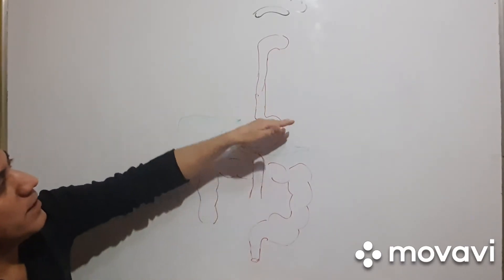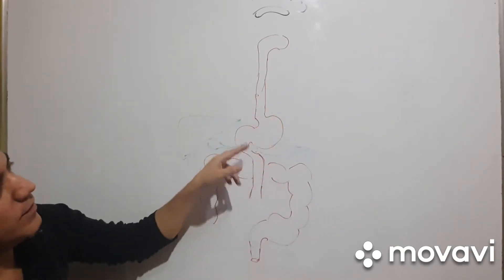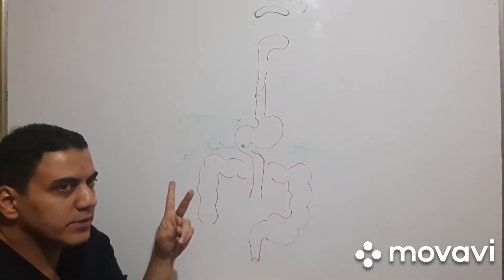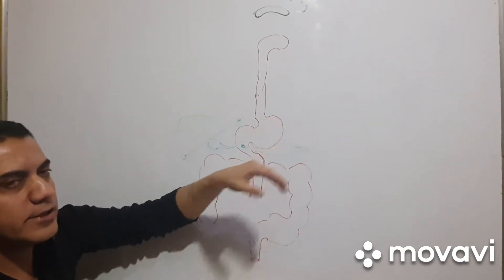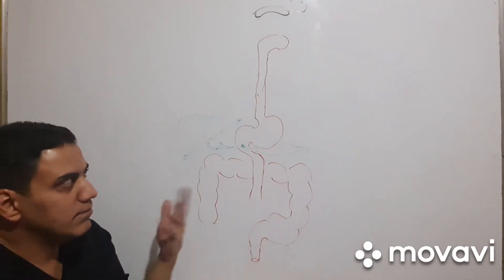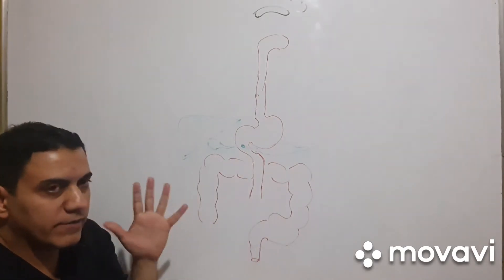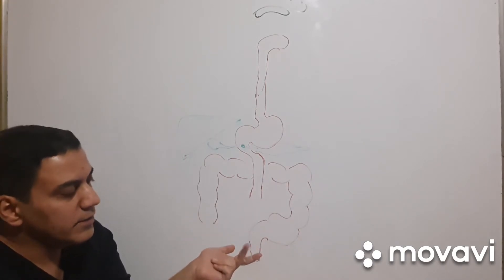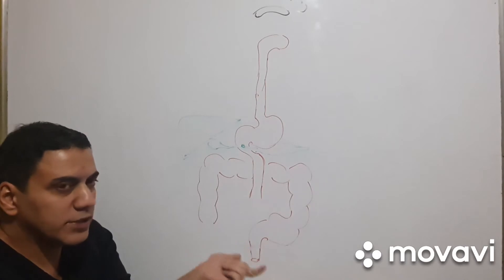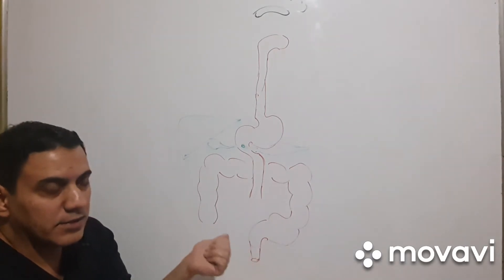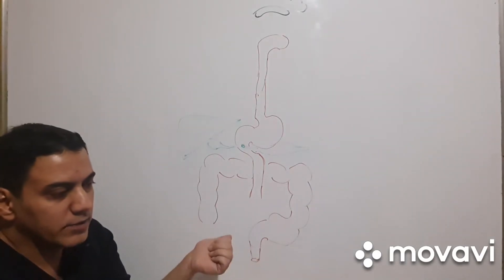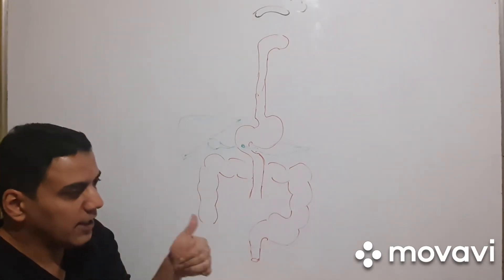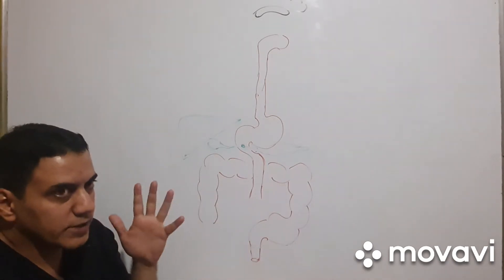About the stomach: there are two functions — secretion and motor. There are secreting cells in the stomach, including cells secreting pepsinogen, cells secreting HCl, mucin, Castle's intrinsic factor (needed for B12 transport), and gastrin — five types of cells. Stomach secretion disorders include hypersecretion and hyposecretion.